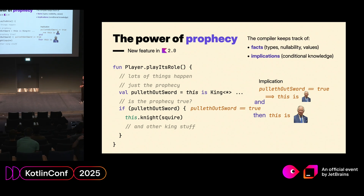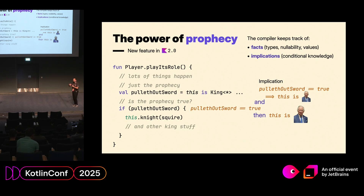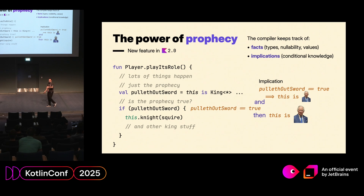The Kotlin compiler records both facts — things about types, nullability, even sometimes about values like what is the value in an enumeration — but it also records implications, which is conditional knowledge that depends on other things being true. It's like a small reasoning engine in the compiler that takes the implications and the things that are true, matches them together, and tries to deduce more information every time something new is added.